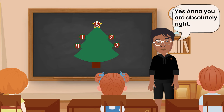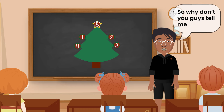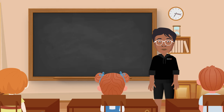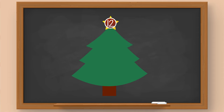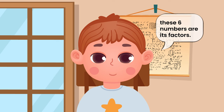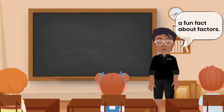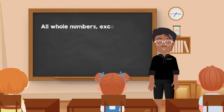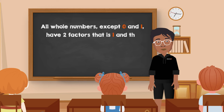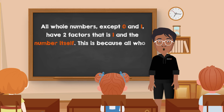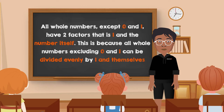Right? Yes, Anna, you're absolutely right. So why don't you guys tell me the factors of twelve? Let me try. Since twelve can be divided by one, two, three, four, six, and twelve itself, these six numbers are its factors. Yes, that's correct, Peter. Let me tell you guys a fun fact about factors: all whole numbers except zero and one have at least two factors — that is, one and the number itself.